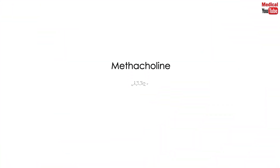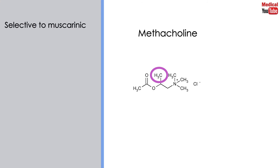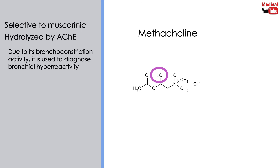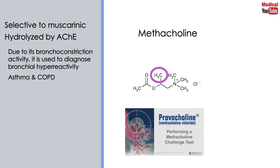Methacholine has a beta-methyl group that makes it selective to muscarinic receptors, but it can still be hydrolyzed by acetylcholinesterase. Due to its bronchoconstriction activity, it is used to diagnose bronchial hyperactivity, which is the hallmark of asthma and also occurs in chronic obstructive pulmonary disease. It is available with the brand name Provocholine.